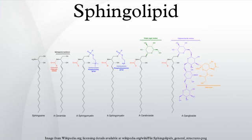Sphingolipidosis, or disorders of sphingolipid metabolism, have particular impact on neural tissue. A sphingolipid within a group consisting of a hydrogen atom only is a ceramide. Other common R groups include phosphocholine, yielding a sphingomyelin, and various sugar monomers or dimers, yielding cerebrosides and globosides, respectively. Cerebrosides and globosides are collectively known as glycosphingolipids.